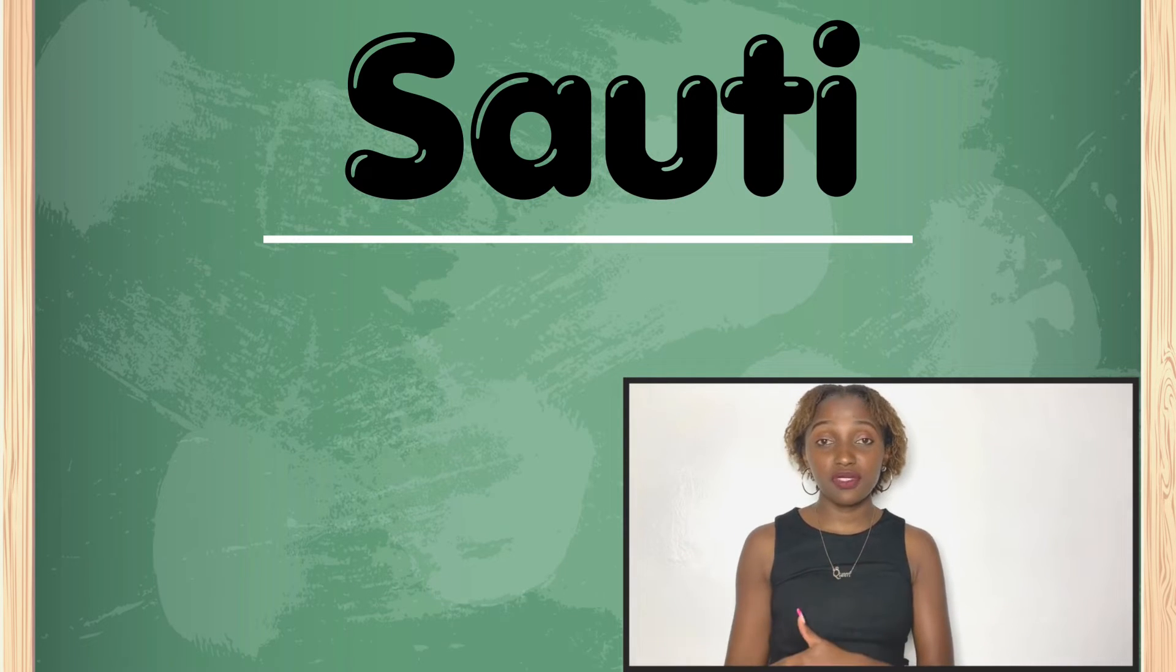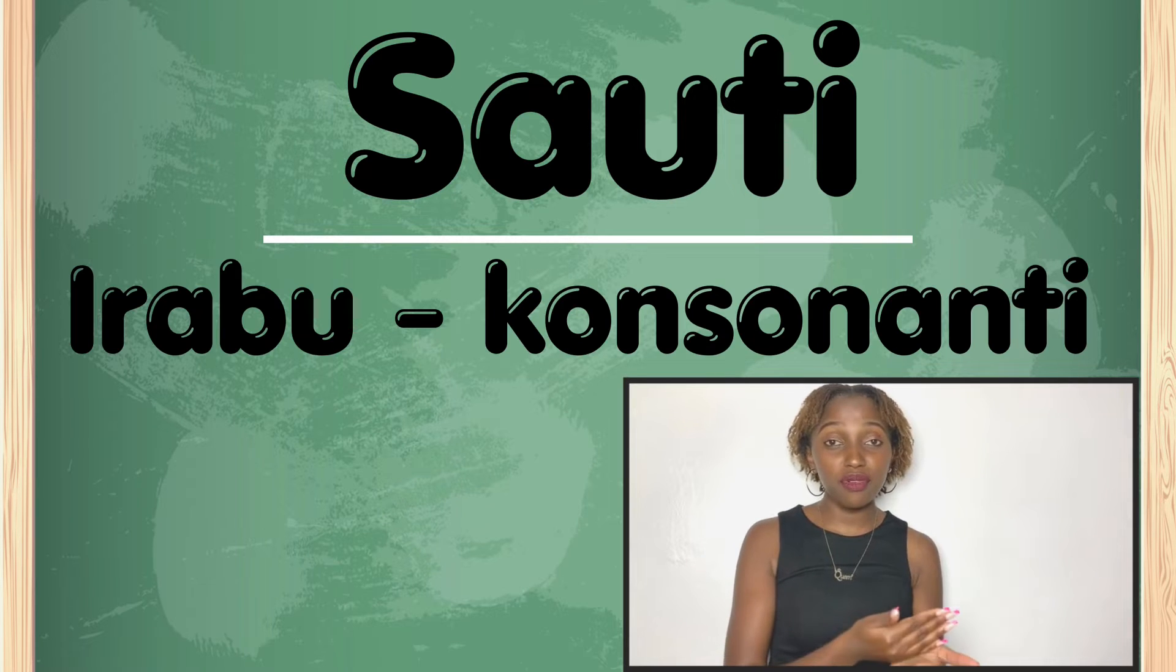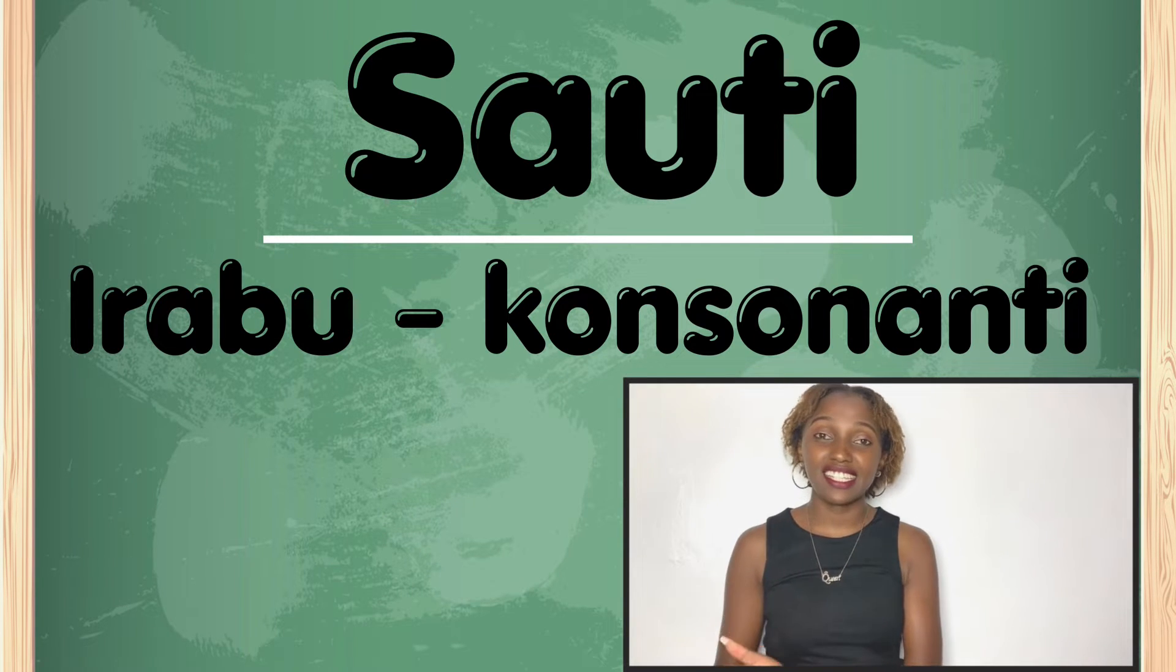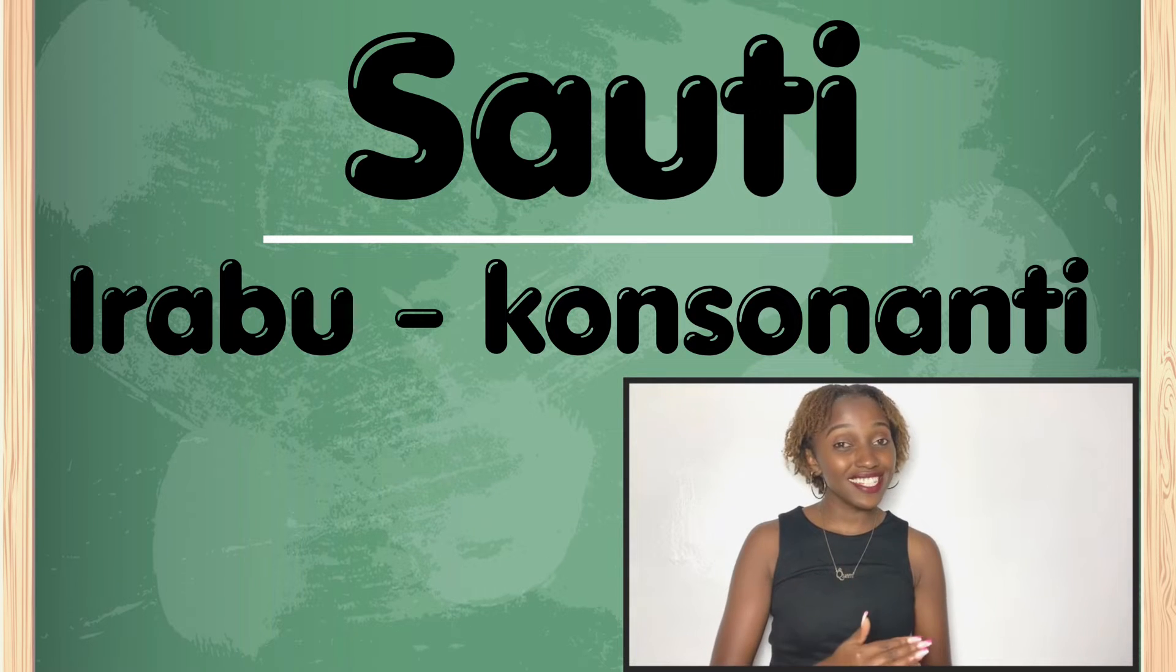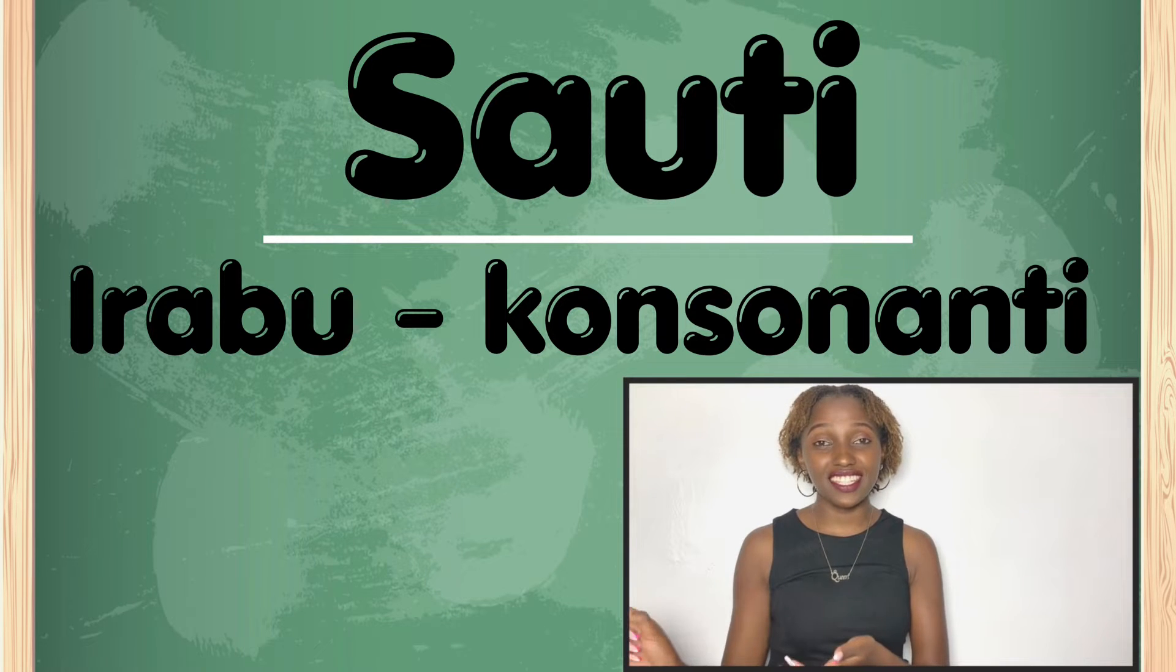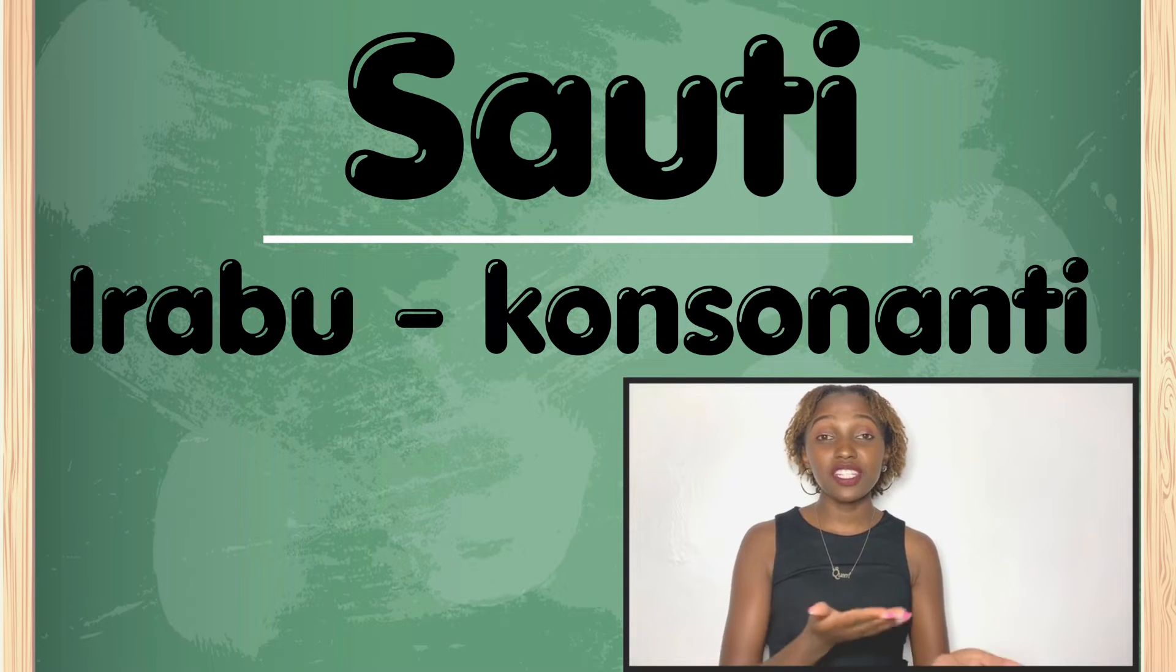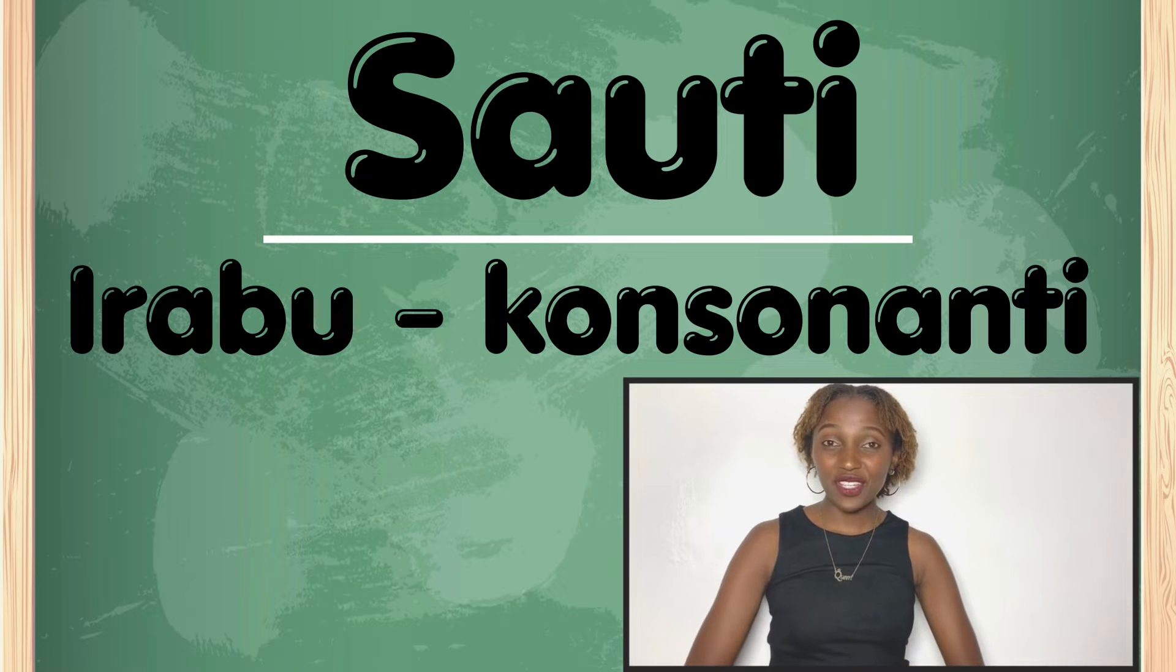So we have A, B, C, D, up to Z. The sautis are divided into two. Kuna irabu na kuna consonanti. Irabu are vowels. Consonanti are, you guessed right, consonants. So today we are going to learn about irabu and consonanti. So how about we write? Good. Let's go.